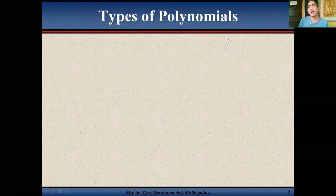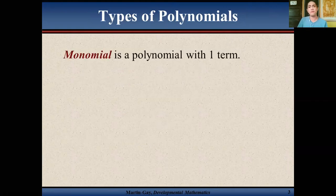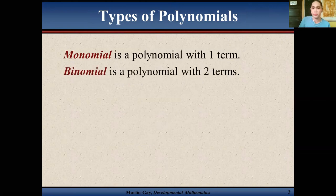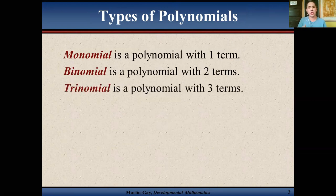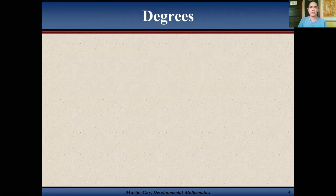Now let's talk about the types of polynomials. We have a monomial with one term. We also have a binomial, which is a polynomial with two terms. And for a trinomial, it's a polynomial with three terms.